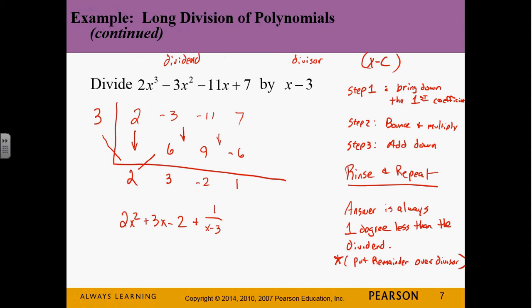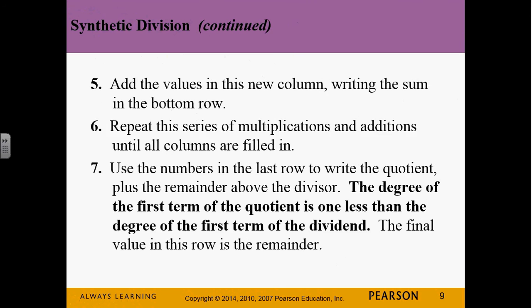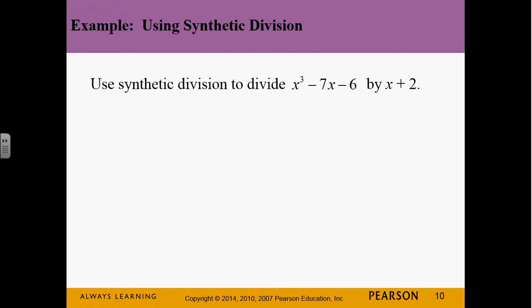Any questions on that problem? We'll do another one and see how it works when we're missing a term. All right, so we've got x cubed minus 7x minus 6, and we're dividing by x plus 2. So what's c going to be? Negative 2. C is negative 2. Now, this is already in descending order, but notice that it's missing the x squared term. So we're going to have to put a zero in for that x squared term. So what are my coefficients going to be? One, zero, negative seven, negative six.